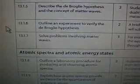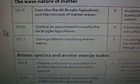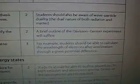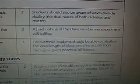Now on this part which says that a student will solve problems involving matter waves, it says that, for example, a student should be able to calculate the wavelength of electrons after acceleration through a given potential difference. In your book on page 337, the calculations are shown there. I also wanted to show them to you right here.